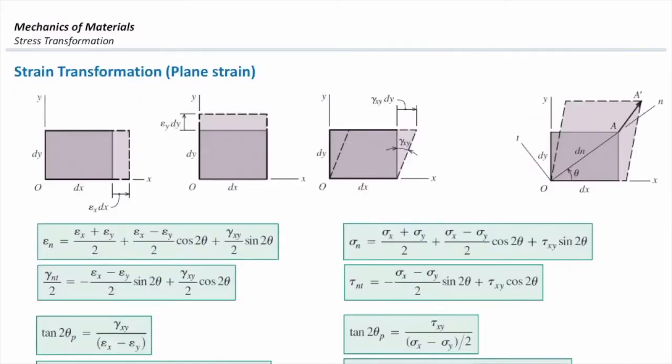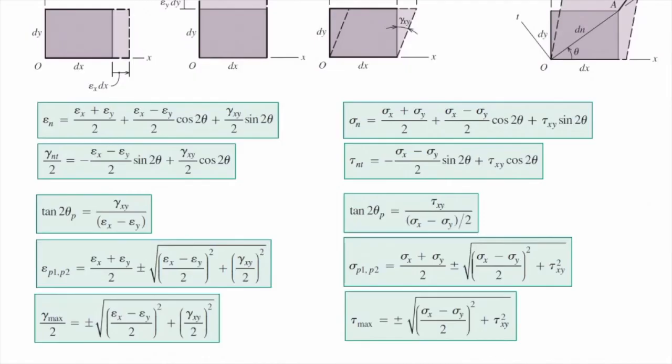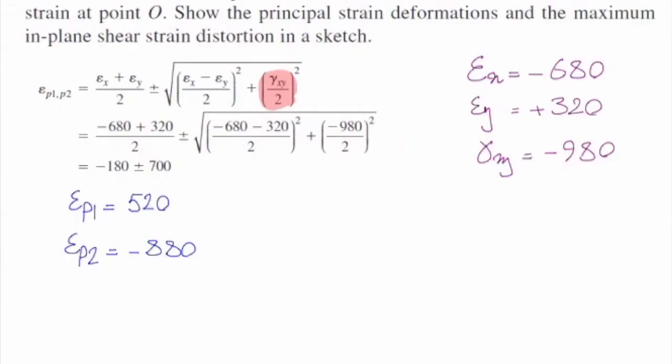I just need to plug that into these equations and determine the principal strains. I will plug that into this equation on the bottom. I just plug the values, and I should highlight that we need to work with half of gamma, as we discussed. And if I plug the values, that gives me epsilon p1 equal to 520, and epsilon p2 equal to negative 880.